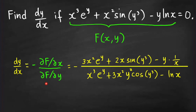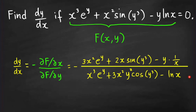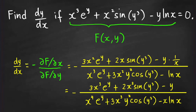Continuing ∂f/∂x: plus sin(y³) — a constant — times the derivative of x², which is 2x, minus y — a constant — times the derivative of ln(x), which is 1/x. For ∂f/∂y, treating x as constant: x³ times the derivative of e^y is x³e^y, plus x² times cos(y³) times 3y², minus ln(x) times 1.